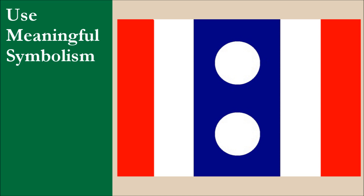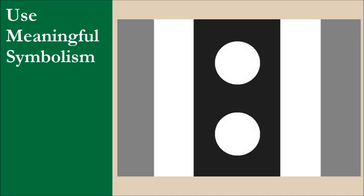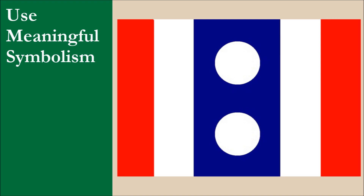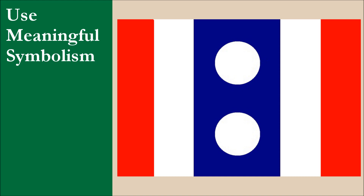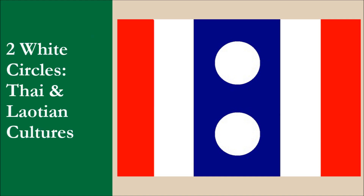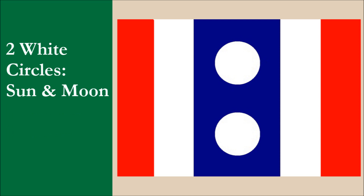Carlo wanted to create a simple flag which was also distinctive, even in grayscale, which you can see here. Initially the flag didn't represent anything, but Carlo then noticed similarities between his design and the flags of Thailand and Laos. He found out these two countries are neighbors and decided to make the flag represent a hypothetical unified nation of Thailand and Laos. The two white circles represent Thai and Laotian culture, as well as the sun and the moon.